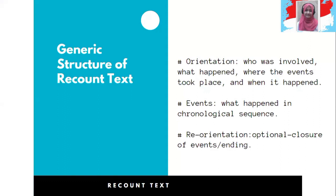Sebelumnya kita akan mulai by having the generic structure of recount text. Ada tiga bagian dalam struktur teks recount. We have orientations — dalam orientasi ini, we've got information about the who, where, what, and when: who was involved, what happened, where the events took place, and when it happened. In the following paragraphs we have the events — what happened in chronological sequence. Biasanya ada conjunctions yang kita gunakan, yaitu sequence conjunctions yang menunjukkan urutan or chronological sequence: first, second, then, after that, sampai dengan finally, lastly, eventually.